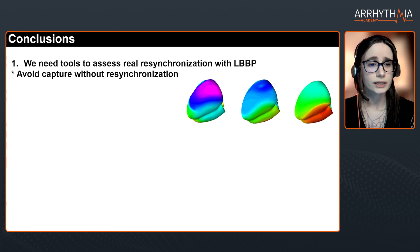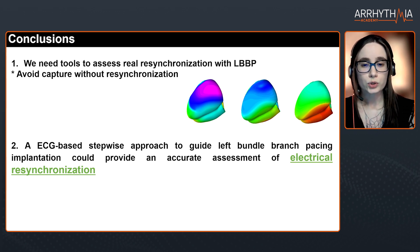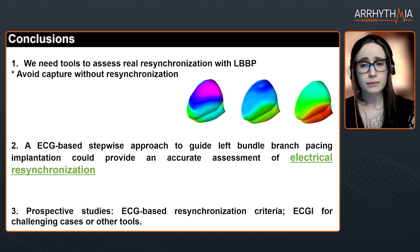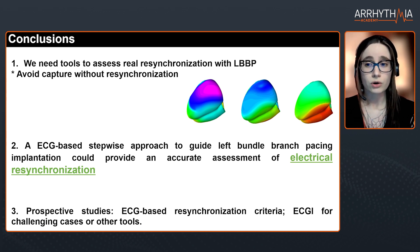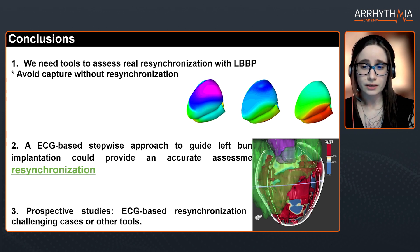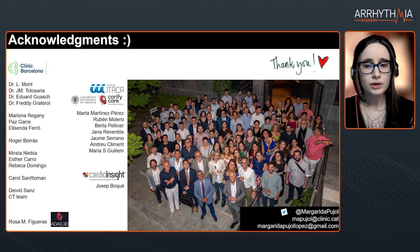First, we need tools to assess real resynchronization with left bundle branch pacing to avoid capture without resynchronization. Second, an ECG-based step-wise approach to guide left bundle branch pacing implantation will provide accurate assessment of electrical resynchronization. Third, we need prospective studies to validate the ECG-based resynchronization criteria — and in some challenging cases we may still need all our tools, such as electrocardiographic imaging or ultra-high frequency ECG, especially with fibrosis, where therapy must be personalized.